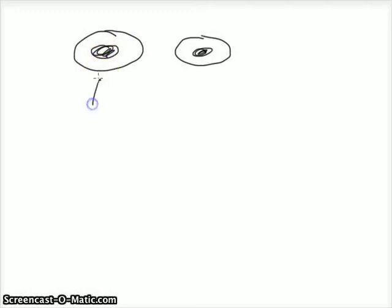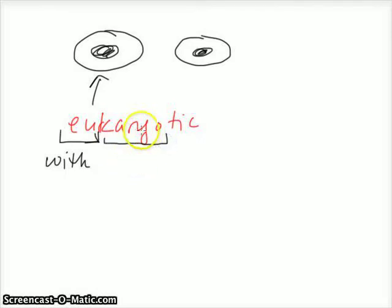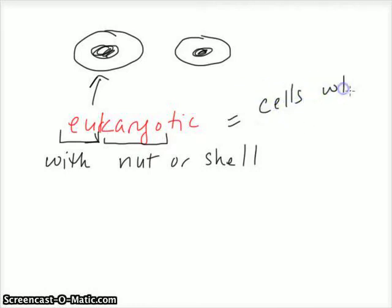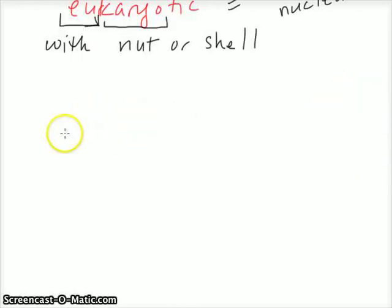I keep drawing these cells. These are known as eukaryotic cells - eukaryotes. What are eukaryotes? Let's break this down. This portion 'eu' means 'with' (that's Greek), 'karyon' means 'nut or shell'. So essentially, a eukaryotic cell is with a nut or shell, and the nut or shell is the nucleus. Eukaryotes are cells with a nucleus.